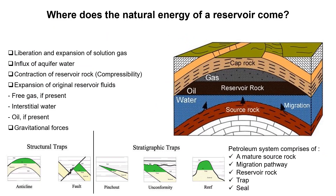Before discussing where the natural energy of a reservoir comes from, let's discuss a petroleum system. A petroleum system comprises a mature source rock, migration pathway, reservoir rock, a trap, and a seal. A shale can act as a source rock, or sometimes even limestone can act as a source rock.